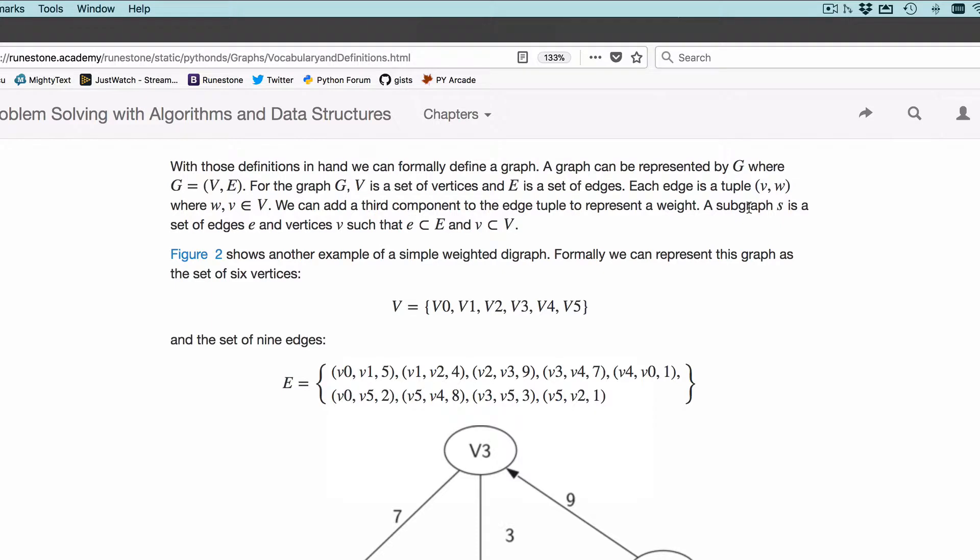A subgraph called S is where the edges in S and the vertices in S are both also in the graph G, which has the complete list of edges and vertices. As we mentioned, you can find trees and subgraphs in a larger graph.